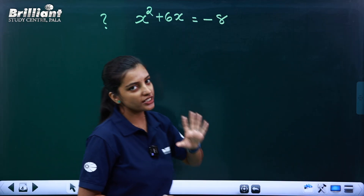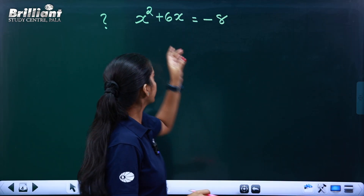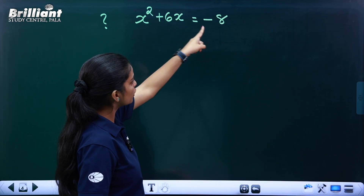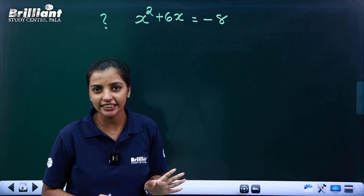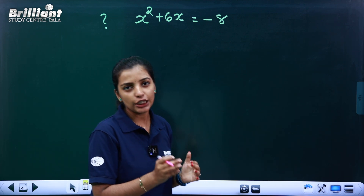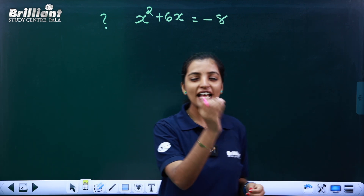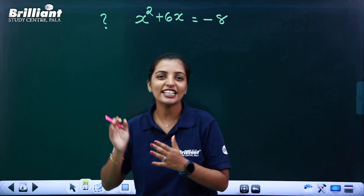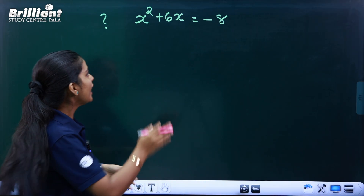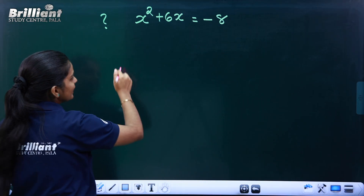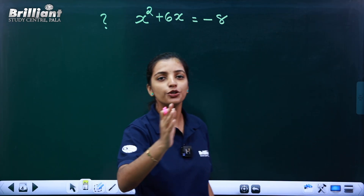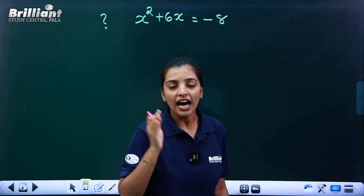Now we know the equation: x² plus 6x is equal to minus 8. We use the quadratic equation — the magical formula — to solve it. Using x² plus bx plus c equals 0, we rearrange to get x² plus 6x plus 8 equals 0.